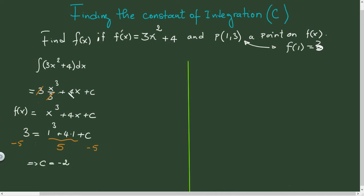And then we can write our function, original function this way. f(x) equals therefore to x³ plus 4x minus 2. And this is here our original function.